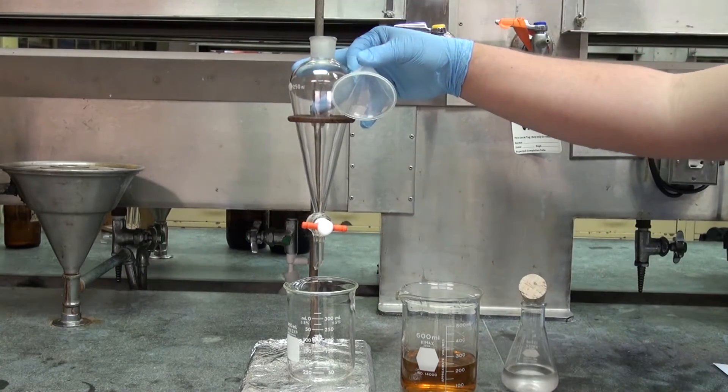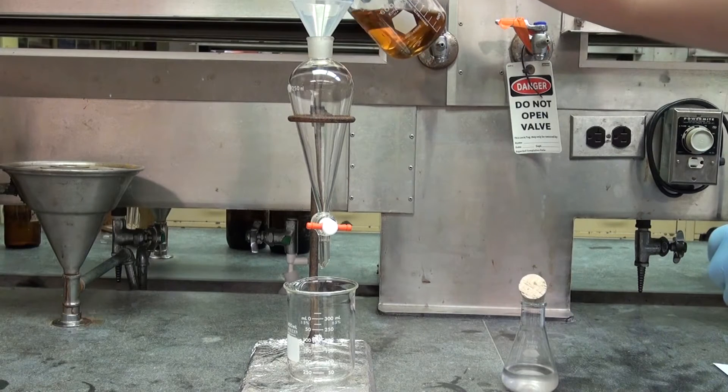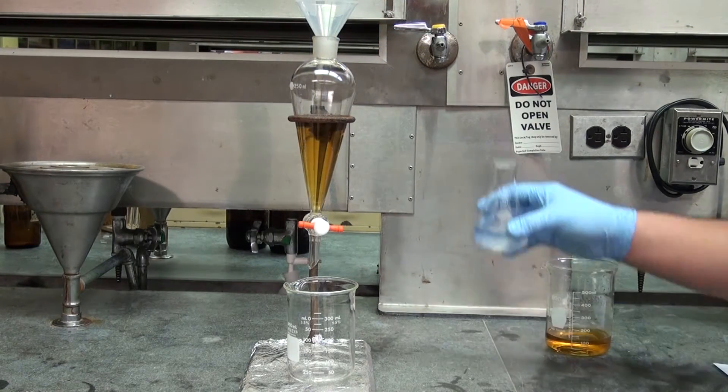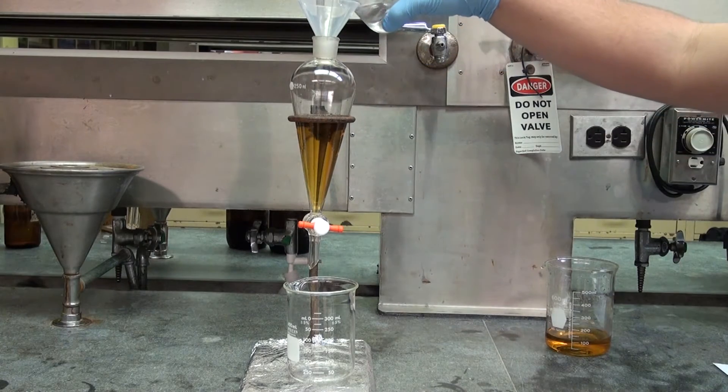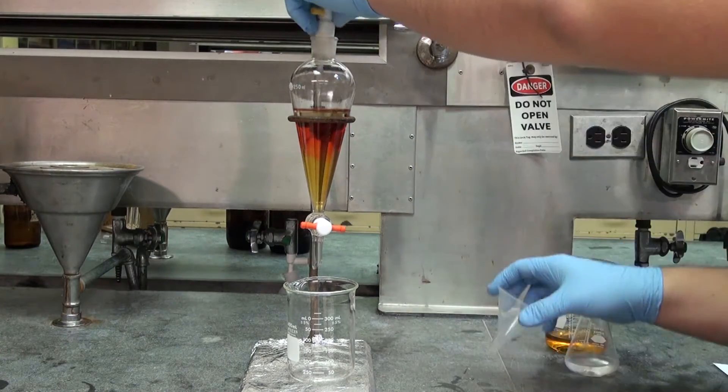First, add the solution you want to extract in the separatory funnel. This is an aqueous layer we want to extract with diethyl ether. Therefore, the organic layer solvent is added, which is diethyl ether. Close the lid.